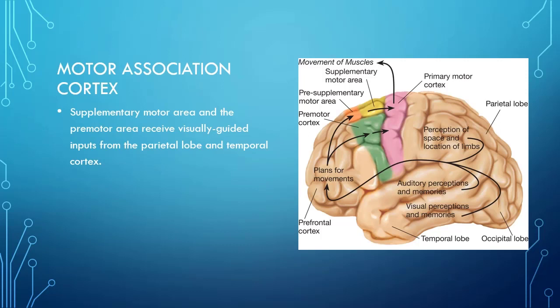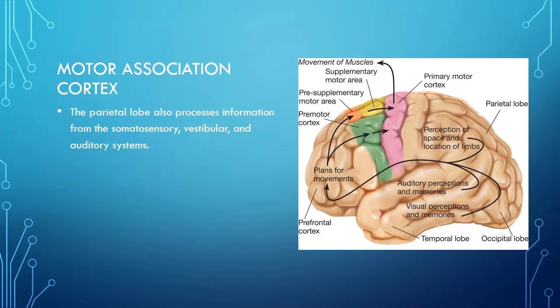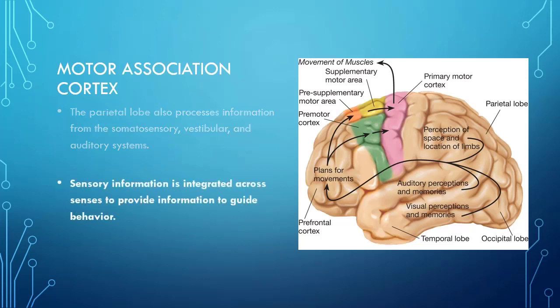A lot of the information that these two areas receive comes through systems you've already learned about. Some information is visually guided from the parietal lobe and temporal cortex, corresponding to the ventral visual stream for 'what' things are and the dorsal stream for 'where' things are. The parietal lobe is also getting auditory and vestibular information. The supplementary motor area and premotor cortex are part of where all of this sensory information begins to come together.